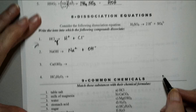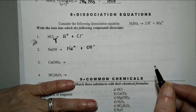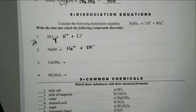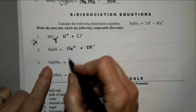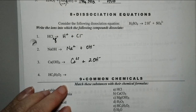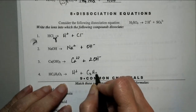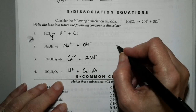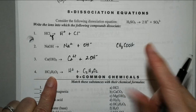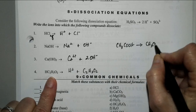For calcium hydroxide, you have one calcium ion and two hydroxide ions. On the last one, you have one hydrogen ion and one acetate ion. If they write it as CH₃COOH, when it splits into ions it will be CH₃COO⁻ plus the H⁺ ion — that's the organic chemistry way of writing it.